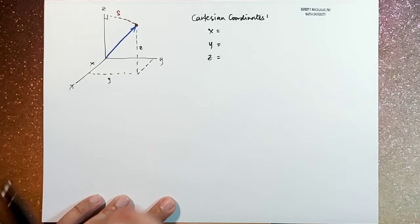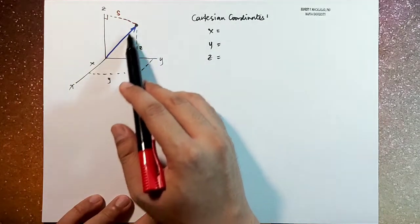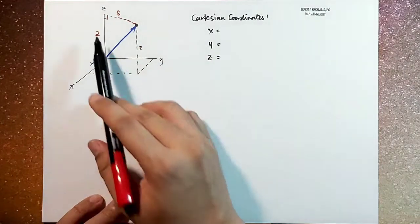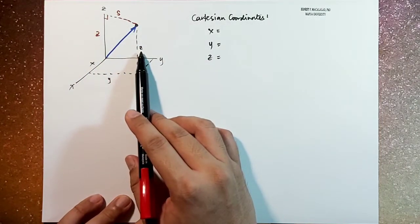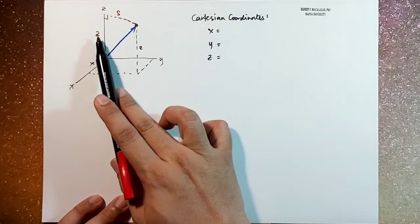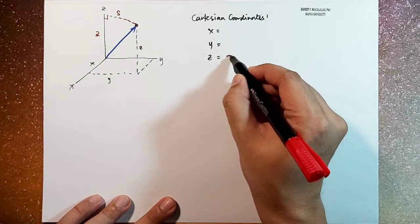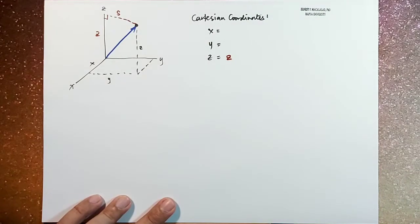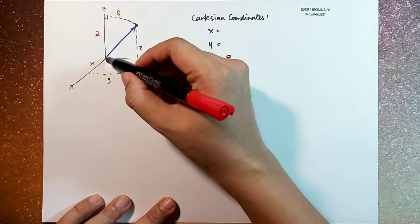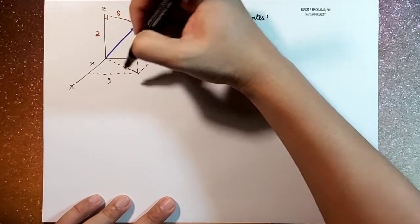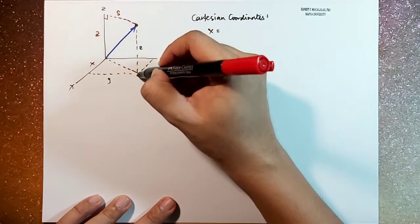Next would be the projection of this vector to the z axis, that's z, which is the same as our z, the same as the z component in the Cartesian coordinate system. Now if we're going to project this in the x, y plane,